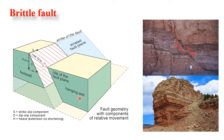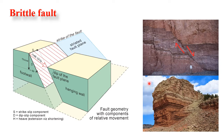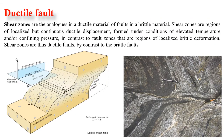In a normal fault, the block lying above the fault plane — the hanging wall block — moves down. In a reverse fault, the hanging wall moves up along the fault plane. These are examples of brittle faults. There is also a ductile fault known as a shear zone, which is analogous to a ductile material fault — shear zones are regions of localized but continuous ductile displacement.